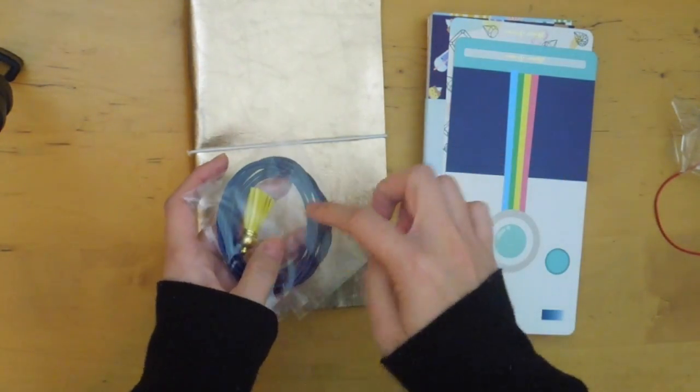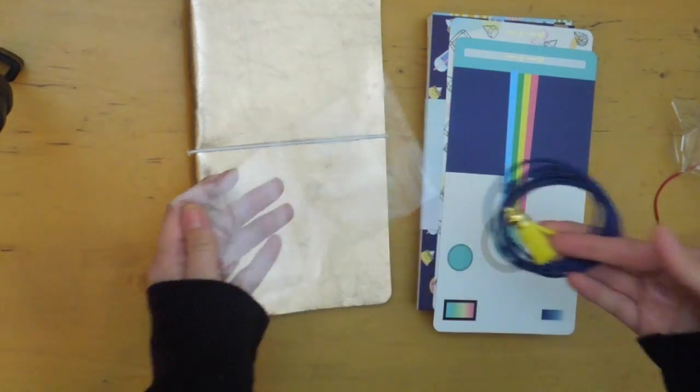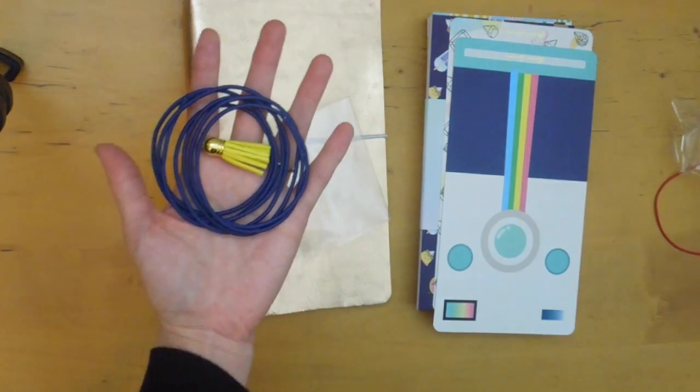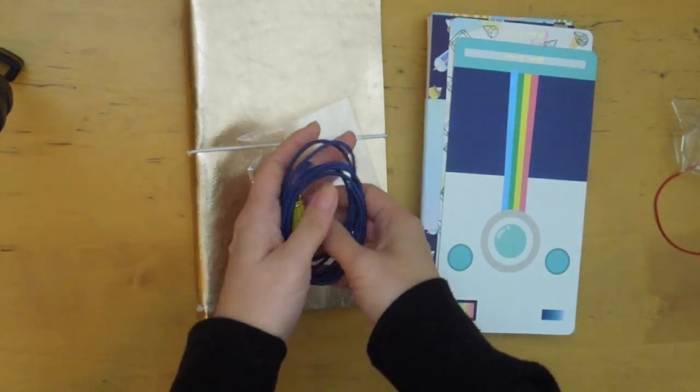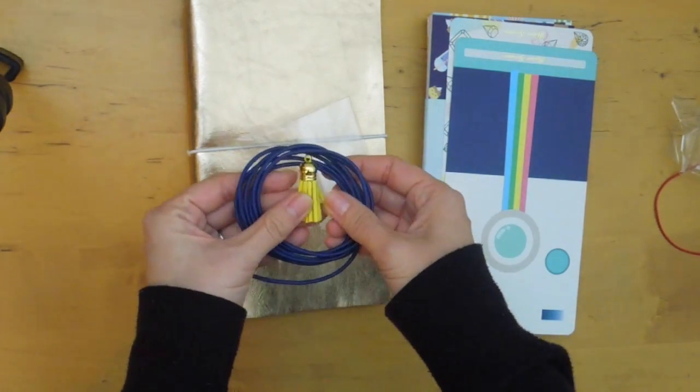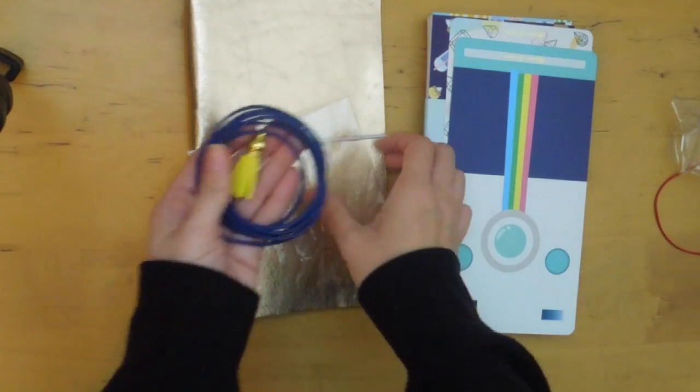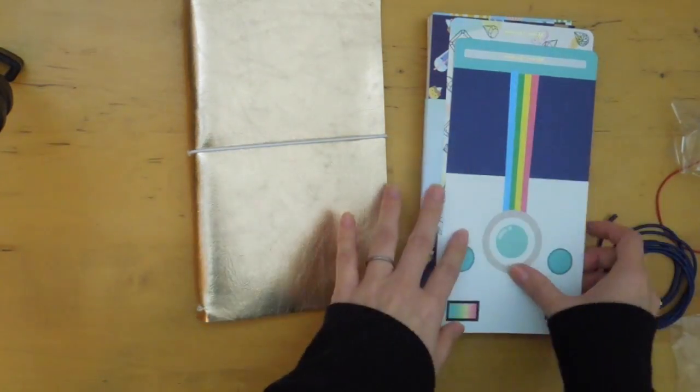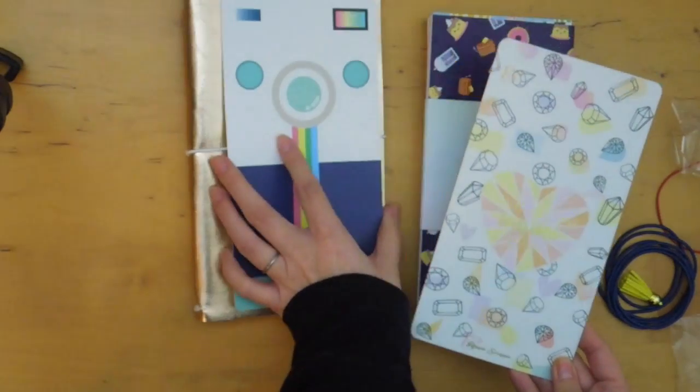I don't believe you can choose the color of the elastic, but it mentions on the website that it comes with a darker one if you choose to remove it and restring yourself. Now this one came with a navy blue elastic and a yellow tassel.